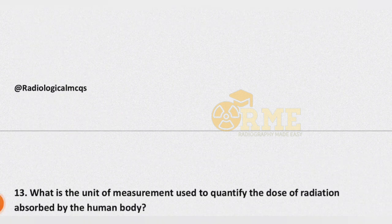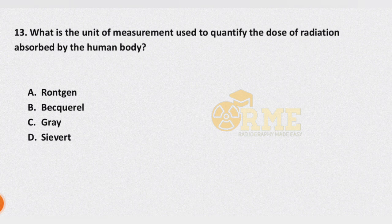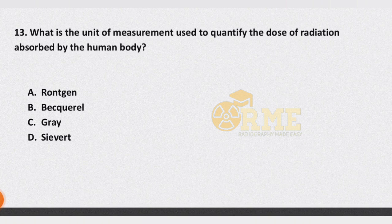Question number 13: what is the unit of measurement used to quantify the dose of radiation absorbed by the human body? The correct answer is undoubtedly option D, that is the sievert.